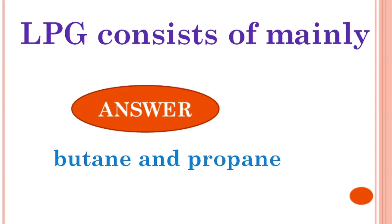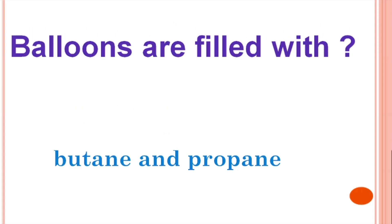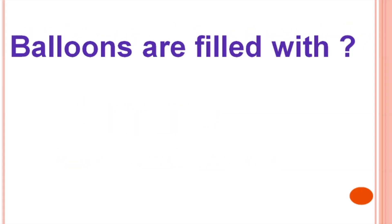LPG consists mainly of butane and propane. Chemically, LPG is made of propane, butane, or a mix of the two, and it consists of carbon and hydrogen atoms.